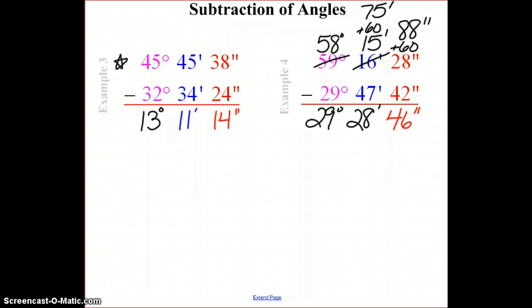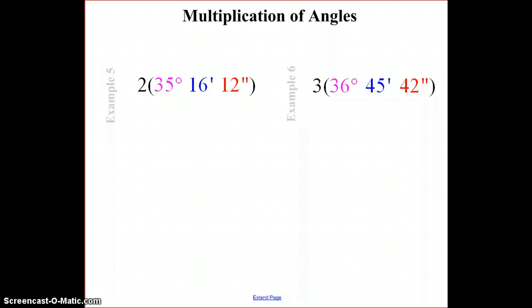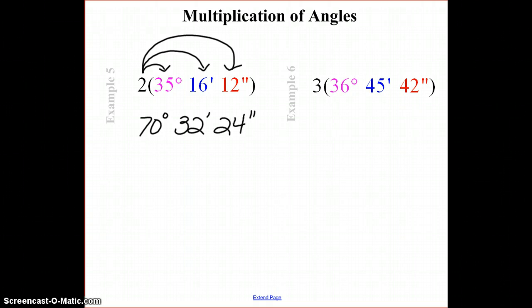Okay, we need to work with two other operations: multiplication and division. So looking at multiplication, it's the same as distributing. I'm going to distribute my 2 to my degrees, to my minutes, and my seconds. I'm simply doubling the size of my angle. That gives me 70 degrees, 32 minutes, and 24 seconds.